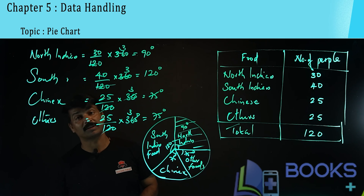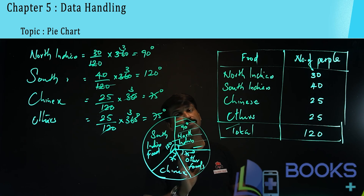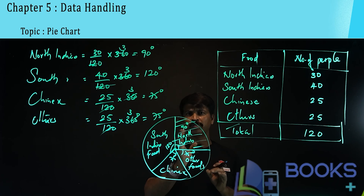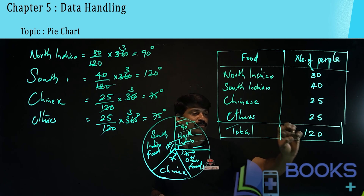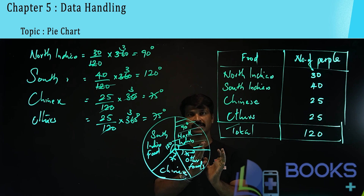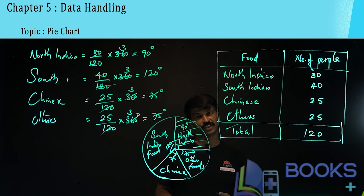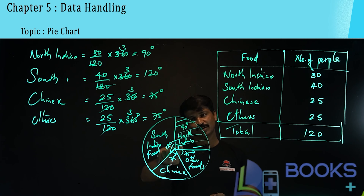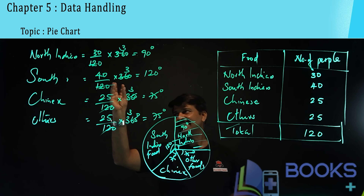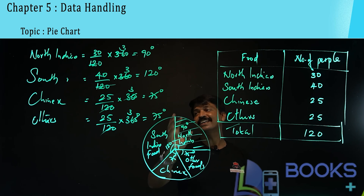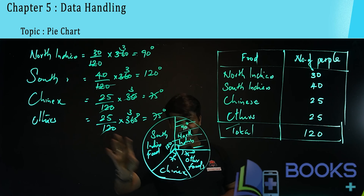This is how we represent the given information using a pie chart. First, find the fraction for each item, then multiply by 360 degrees to get the degree measure for the sector. When you add all the angles, you get 360 degrees. We found the share of North Indian food, South Indian food, Chinese food, and other types of food in the pie chart.